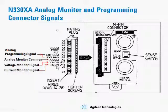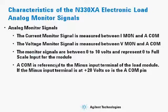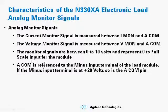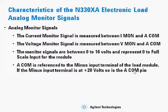For the analog monitor signals, the current monitor signal is measured between Imon and ACOM, and the voltage monitor signal is measured between Vmon and ACOM. The monitor signals are between 0 to 10 volts and represent 0 to full scale input. ACOM is referenced to the minus input terminal of the load, so care must be used — if the minus input terminal is at plus 20 volts, so is the ACOM pin. If ACOM is grounded, current will flow from the minus input terminal through the ACOM pin and can cause internal damage to the load.